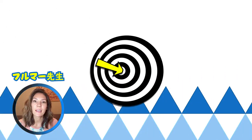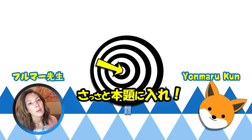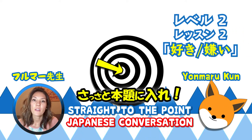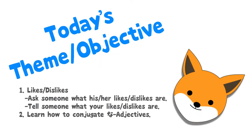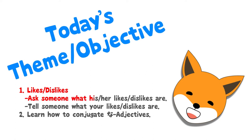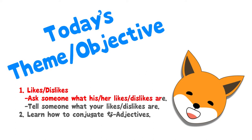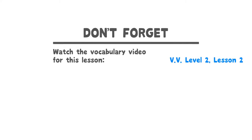Hello everyone, I'm Furuma. Thank you very much. I want to talk about what you like about level 2. By the end of today's lesson, you will be able to ask someone what kinds of things they like and dislike, tell people your own likes and dislikes, and conjugate na-adjectives. I would recommend watching the Tango video for level 2 lesson 2 before watching this video. では、今日のレッスンスタート!